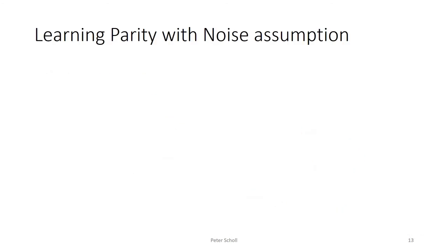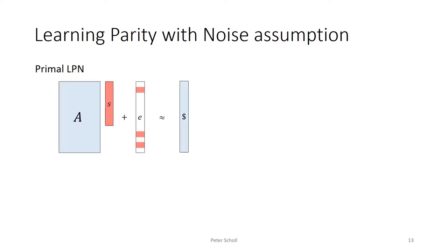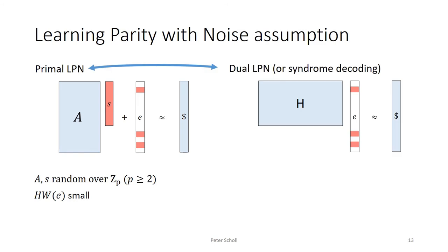The security of our constructions relies on arithmetic variants of the learning parity with noise assumption. In its most basic form, the primal version of LPN says that given AS + E, where A is a large random public matrix, S is a secret vector, and E is a sparse error vector with small Hamming weight but uniformly random non-zero entries, this is indistinguishable from a uniformly random vector. This is also equivalent to LPN in its dual version, also known as the syndrome decoding problem, where the sparse vector E is simply multiplied by a public compressing random matrix H. We'll also consider variants where the matrices A and H are more structured rather than simply uniform.